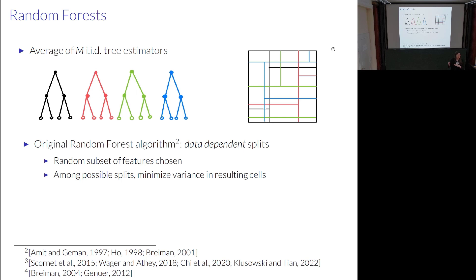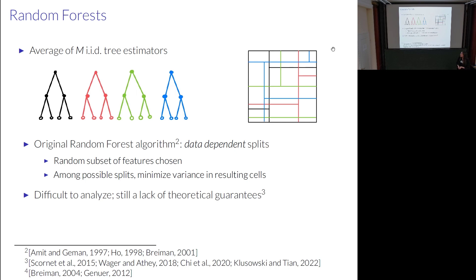The original random forest algorithm — the popular off-the-shelf version popularized by Breiman in 2001 — generates this random partition in a very data-dependent way. A random subset of features is chosen, and then a split is made that minimizes variance across all possible splits along those dimensions. This creates a data-adaptive partition that learns a similarity metric by grouping similar points together.